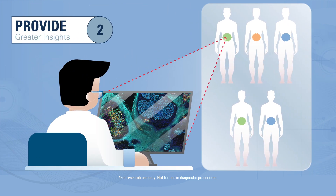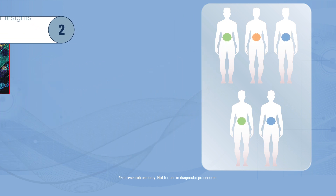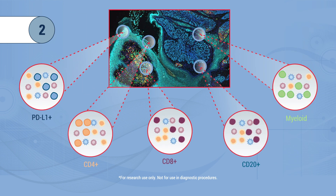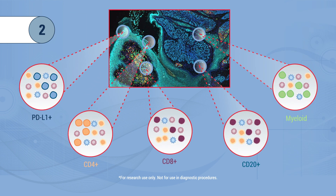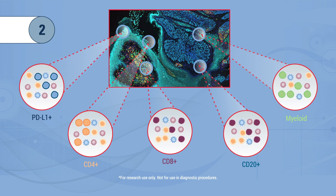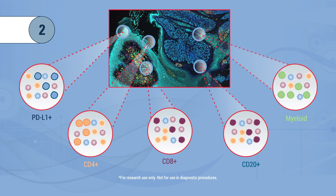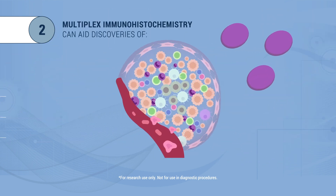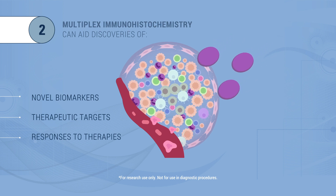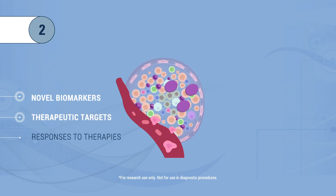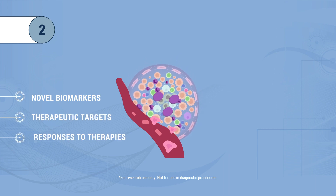Multiplex immunohistochemistry gives you a comprehensive view of the disease and patient heterogeneity, as well as an insight into the phenotype of the tumor microenvironment. It also grants single-slide visibility into cellular-spatial relationships and activation states of multiple cell types as they occur in non-diseased and tumor tissue samples. This level of molecular understanding in disease mechanisms is invaluable for identifying novel biomarkers, therapeutic targets, and investigating outcomes of therapeutic interventions.